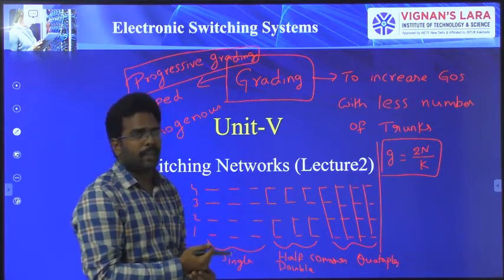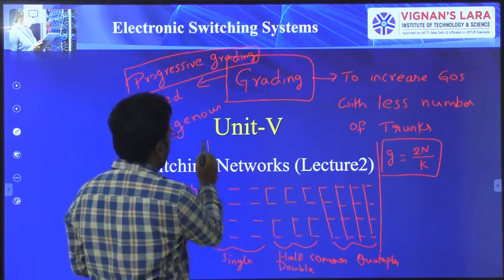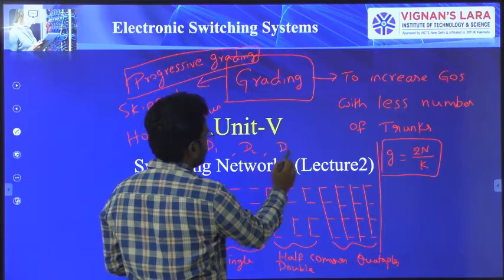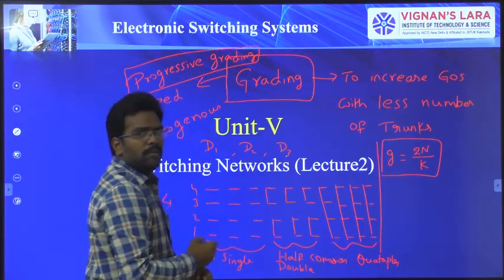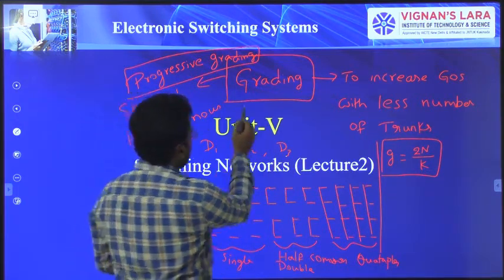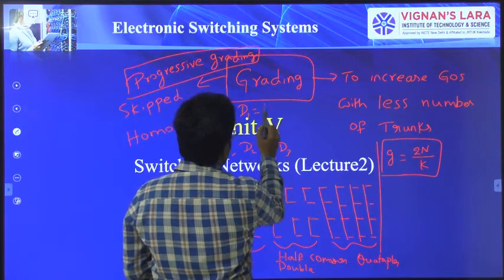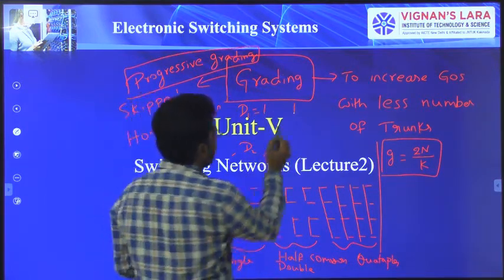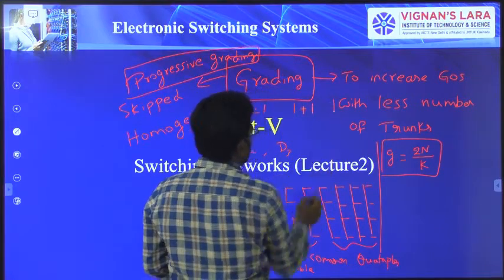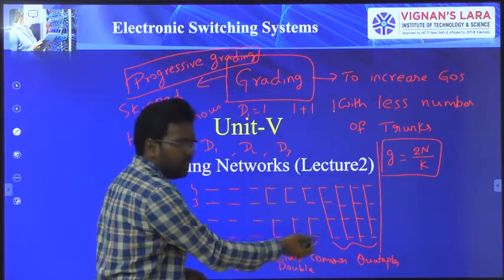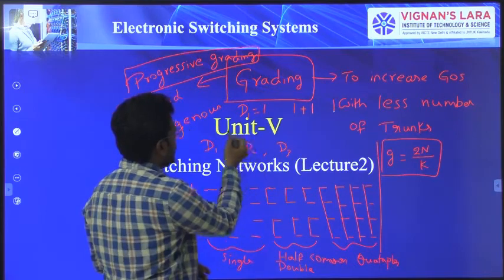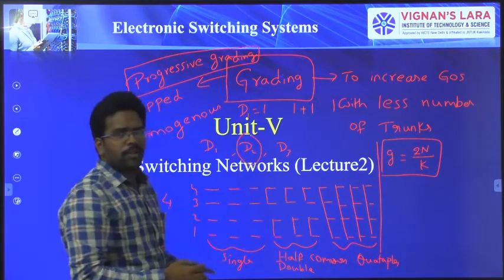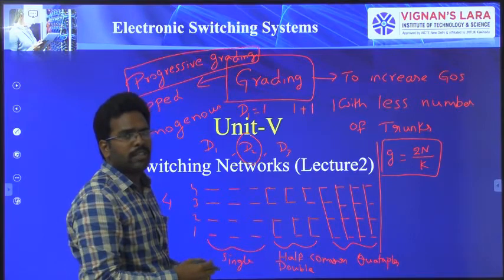We found the values of D1, D2, and D3. D1 stands for the successive difference between singles and doubles, plus the successive difference between doubles and quadruples. Whichever has the least value gives the best solution for grading. That is what we studied in the previous classes.